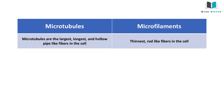Microtubules are the largest, longest hollow pipe-like fibres present inside the cell, whereas microfilaments are the thinnest rod-like fibres present inside the cell.